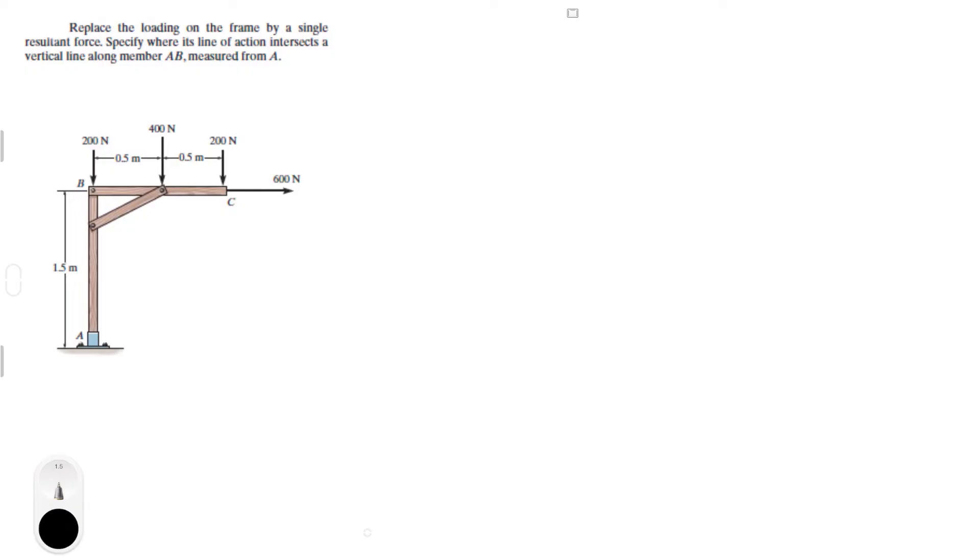Alright guys, this was the last problem for the day, which is replacing the loading on the frame by a single resultant force and then specify where its line of action intersects a vertical line along member AB, which would be a line somewhere on there. So that being said, let's get started.